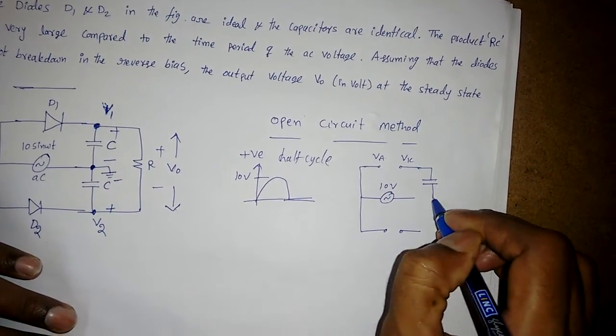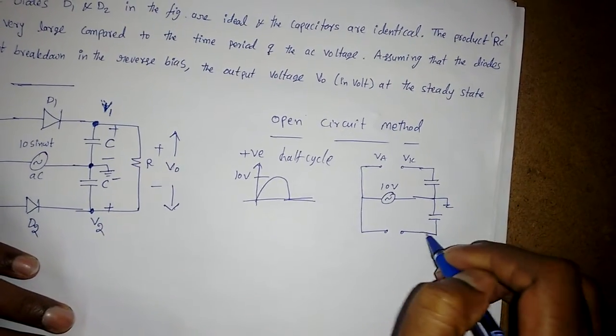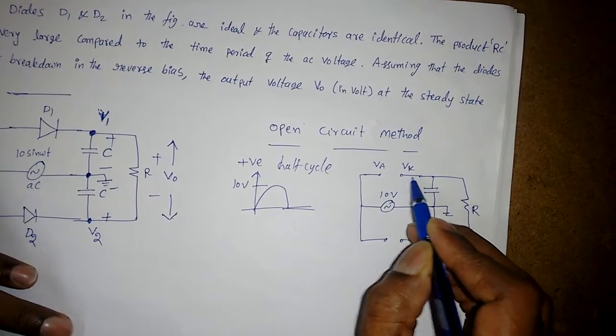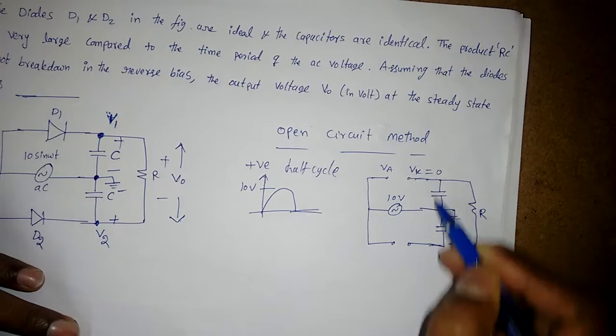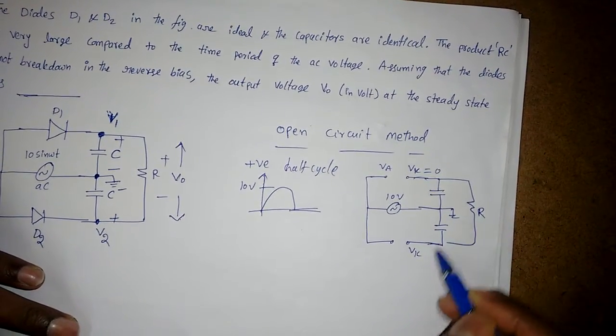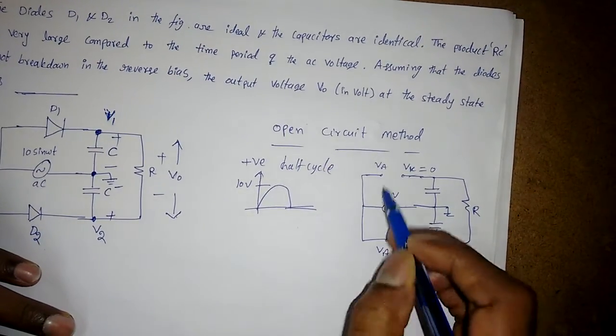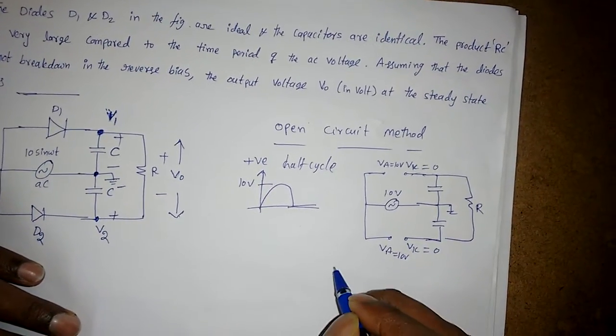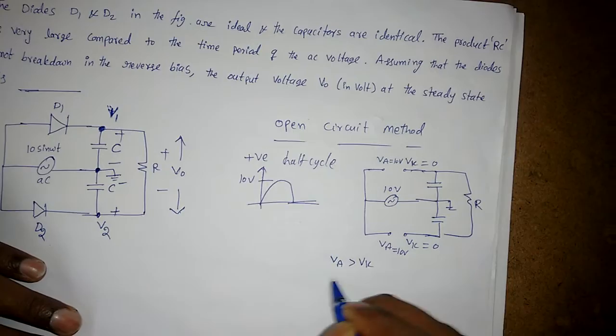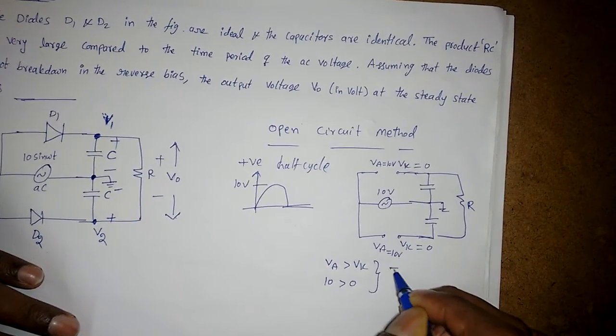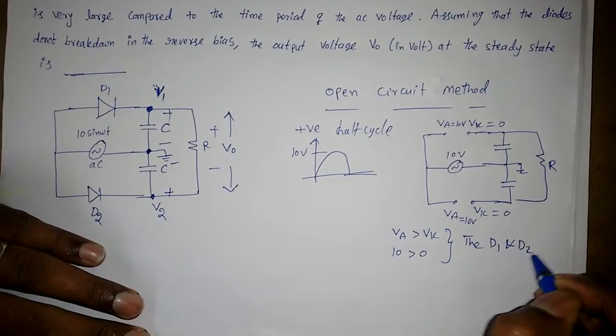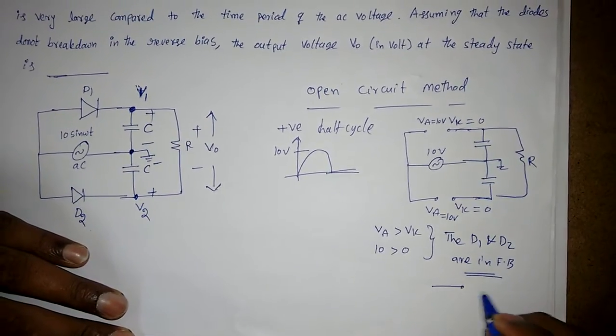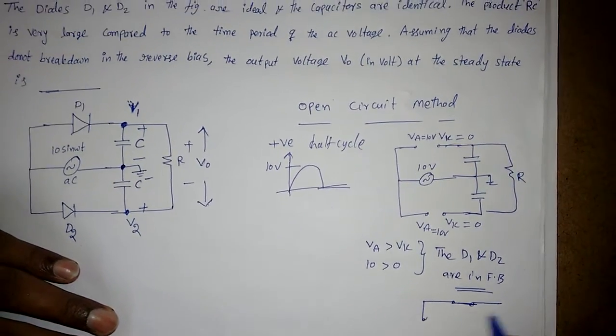Both capacitors are grounded. VK is connected to ground, that is VK is equal to 0. Similarly, for the downward also, VK is connected to 0. But what is VA? For both, VA is connected to 10V. Now we can say simply, VA is greater than VK because 10V is greater than 0. So diodes D1 and D2 are in forward bias.